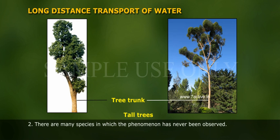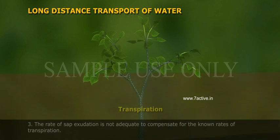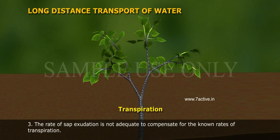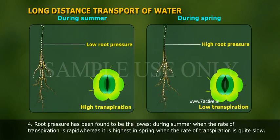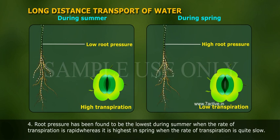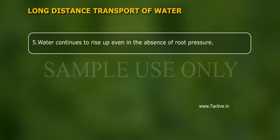Second, there are many species in which the phenomenon has never been observed. Third, the rate of sap exudation is not adequate to compensate for the known rates of transpiration. Fourth, root pressure has been found to be the lowest during summer when the rate of transpiration is rapid, whereas it is highest in spring when the rate of transpiration is quite slow. Fifth, water continues to rise up even in the absence of root pressure.